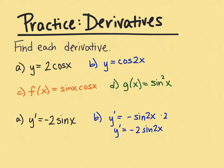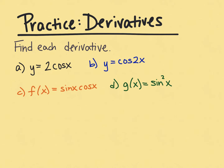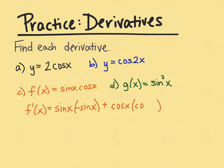Please note the difference in parts a and b. In part c we have a product that requires the product rule because each factor — our u and our v — both contain the variable x. Finding f prime using the product rule: we take the original first, sine of x, times the derivative of the second — the derivative of cosine is negative sine — then add the original second, cosine of x, times the derivative of the first, which is cosine of x. Cleaning this up we'll have negative sine squared plus cosine squared.